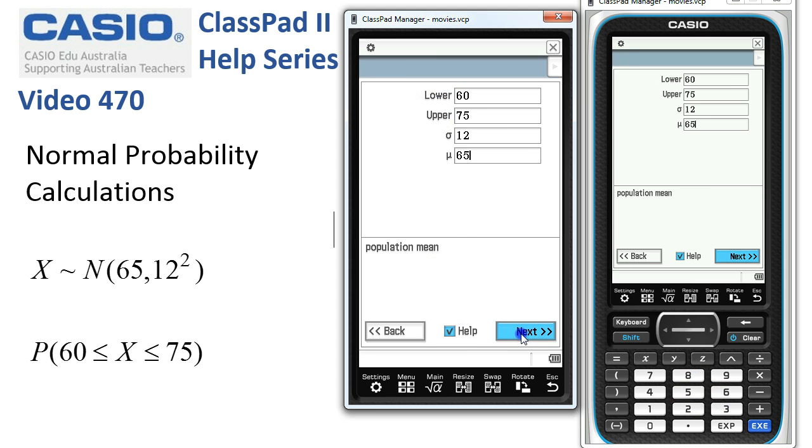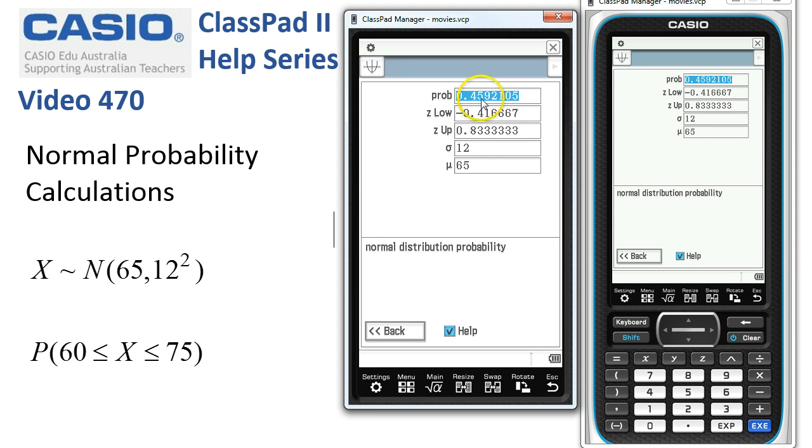Now we're all set. We simply tap on next and the probability is calculated. The z-scores for a standardized normal distribution are also displayed.